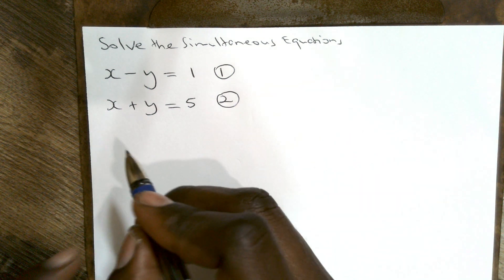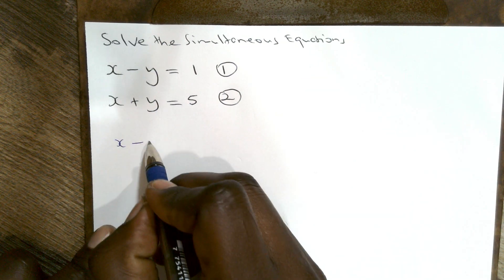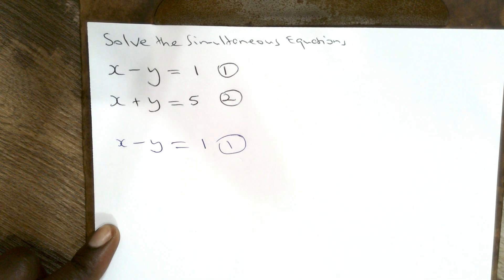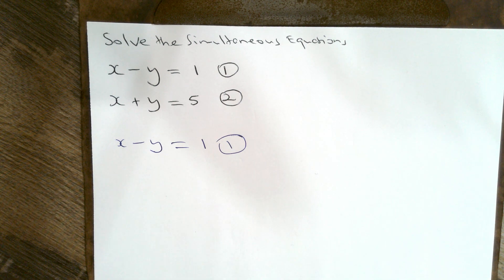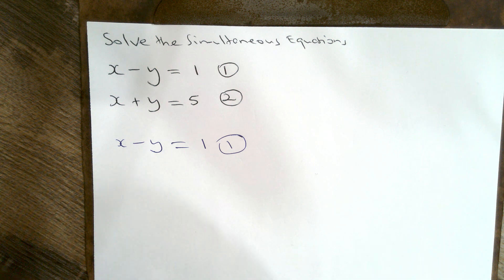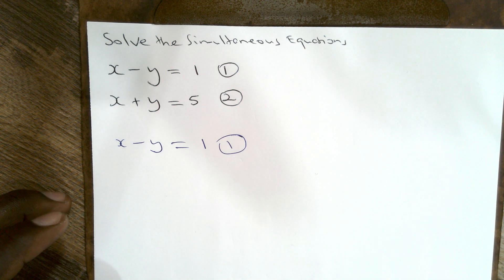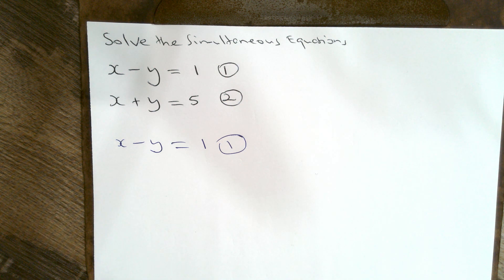We have x minus y equals 1 — that's equation 1. Let's make x the subject of the formula, so let's get an equation for x in terms of y. If you all remember how we did that in transposition, we're going to do the same thing here. What could we do to the left-hand side that would result in x being the only thing left? We could add y.